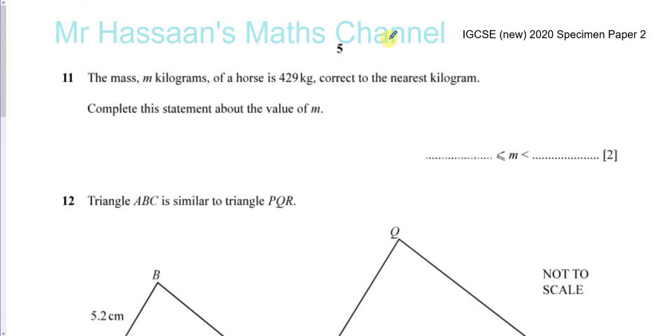Question number 11 is a question about limits of accuracy. This is from the specimen paper for 2020 IGCSE. It's a question about limits of accuracy, upper and lower bounds. So it says the mass m kilograms of a horse is 429 kilograms, correct to the nearest kilogram. Complete this statement about the value of m.